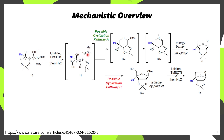This oxonium can then be attacked by either of these two alcohols. In pathway A, we have the primary alcohol attacking, forming a cyclic acetal, which is also a methoxypyran. Alternatively, if we have the tertiary alcohol attacking, we'll instead form a tetrahydrofuran, and this is an isolable byproduct which doesn't lead productively to the observed product 13.